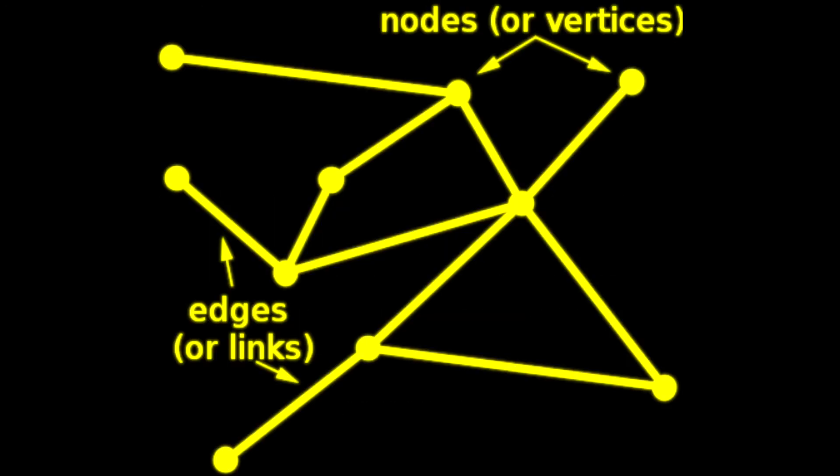A network, or graph, is a collection of nodes and edges with each edge connected to two nodes, but with each node potentially connected to any number of edges.